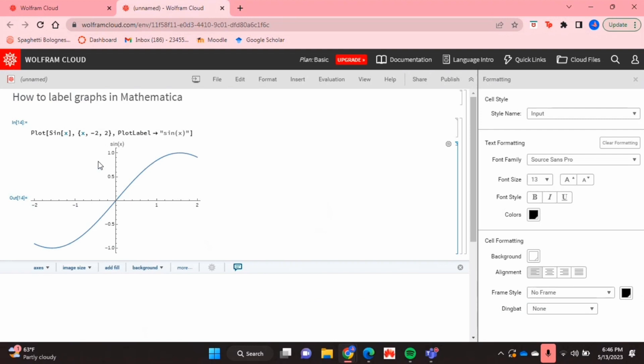And yeah, that's basically it. If you wanted to know how to label graphs in Mathematica, this is the easiest way I know how. And if you know of another way, then leave a comment below and make sure to subscribe for more videos.